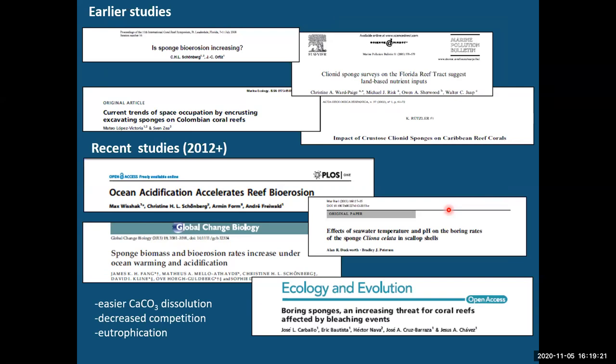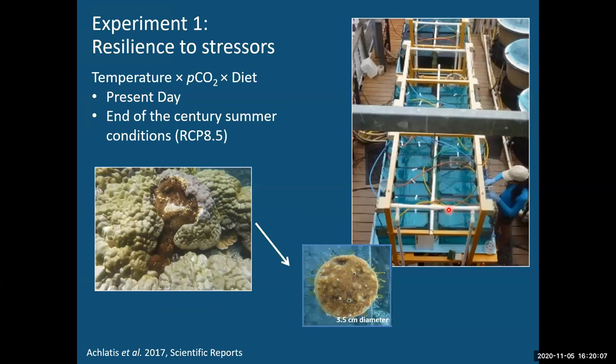Many studies have shown that bioeroding sponges are already on the rise and predicted to do even better in the future, mainly for three reasons: first, ocean acidification makes it much easier for them to dissolve calcium carbonate chemically; second, as corals are increasingly compromised, these sponges, which seem to suffer less from the same stressors, are increasingly winning competition with corals; and third, they seem able to take advantage of eutrophication to increase their feeding levels.